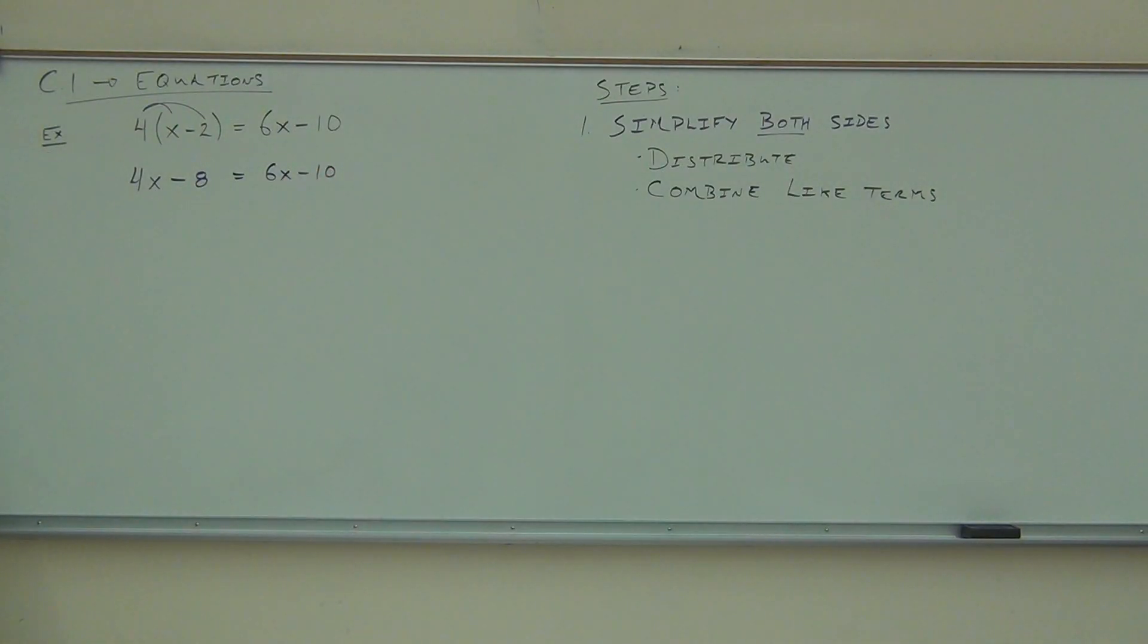We have our 6x minus 10. We check to see if we have any like terms to combine. Do we have any like terms in this problem? Be careful when you say that. Let me rephrase and give you a little definition of like terms. Like terms have to be on the same side of the equation. Same side. So look up here. Do we have any like terms? No. These ones aren't considered like terms yet because they're not on the same side of the equation.